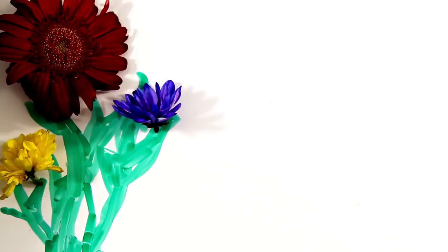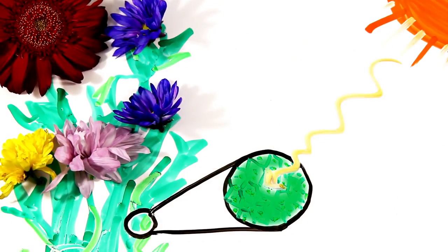While plants come in a range of colors, the predominant color is green due to chlorophyll, the energy-absorbing pigment found in plants critical for photosynthesis.